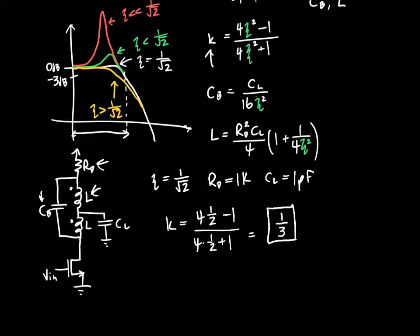Okay, so what about cb? What about our bridging capacitor? Well, it's just equal to 1 picofarad divided by 16 times zeta squared, which, as we recall, is just 1 half. So that's 1 picofarad divided by 8, or 125 femtofarads. And that's also a reasonable value, because we can build capacitors of that value on integrated circuits.